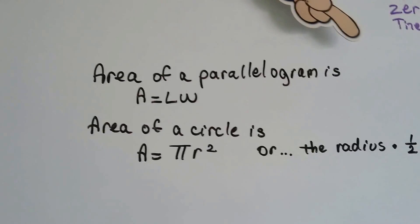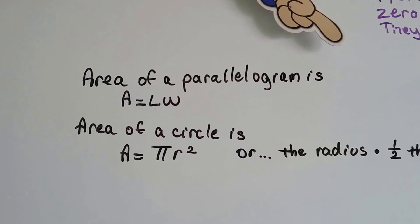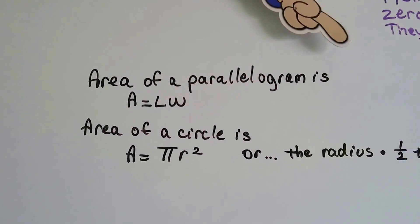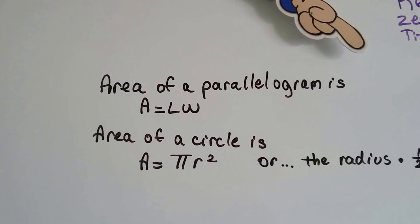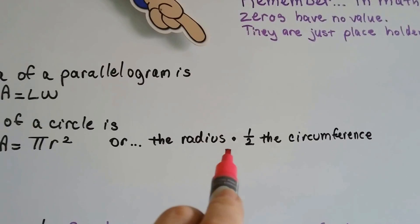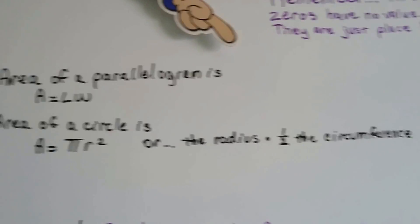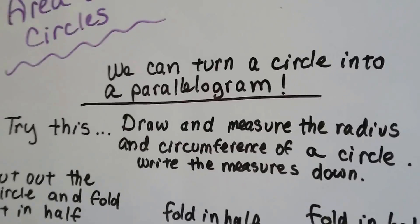The formula for the area of a parallelogram is A equals LW, or the area equals the length times the width. The area formula for a circle is area equals pi r squared. But I'm going to show you something: we can use the radius times half the circumference. How can we do that? We can turn a circle into a parallelogram.